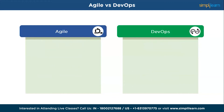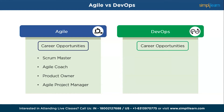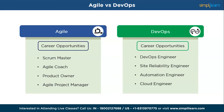Let's look at some popular career opportunities in Agile and DevOps. In Agile, these include Scrum Master, Agile Coach, Product Owner, Agile Project Manager, and many more. Some popular career opportunities in DevOps include DevOps Engineer, Site Reliability Engineer, Automation Engineer, Cloud Engineer, and many more.